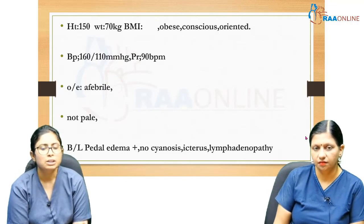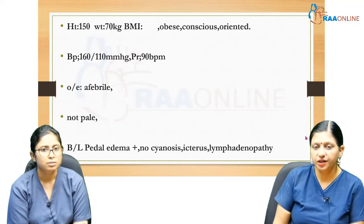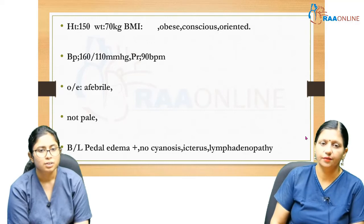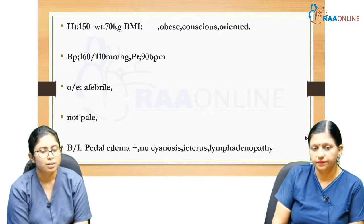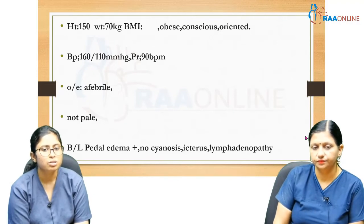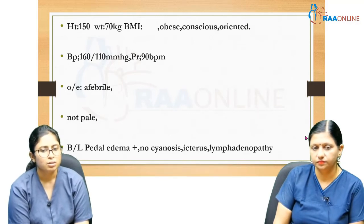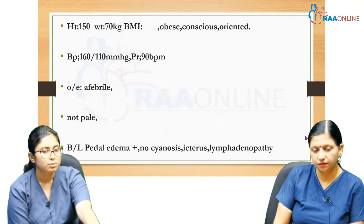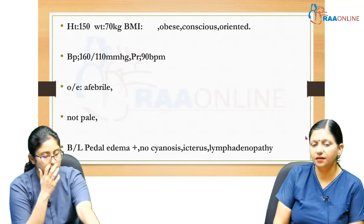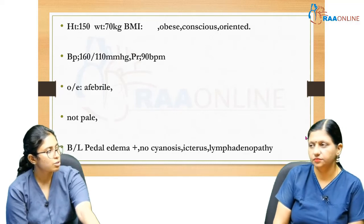BP is 160/110 mmHg, pulse rate 90 beats per minute. Blood pressure is measured in the right arm in the sitting position. Patient is afebrile, not pale, no icterus, no lymphadenopathy. Bilateral pedal edema is present — pitting type. Pedal edema is checked at the medial malleolus, dorsum of the foot, and the shin.